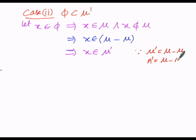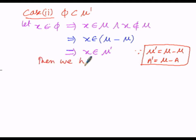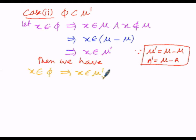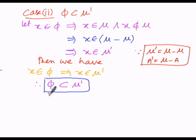The reason is that μ complement equals μ minus μ, and A complement equals μ minus A, so A must be subtracted from the universal set. The LHS is x belongs to the empty set, which implies x belongs to μ dash. The elements belonging to the empty set are also elements of μ dash. Therefore the empty set will be the subset of μ dash, and we can write φ is the subset of μ dash. Let us consider this as Equation 2.